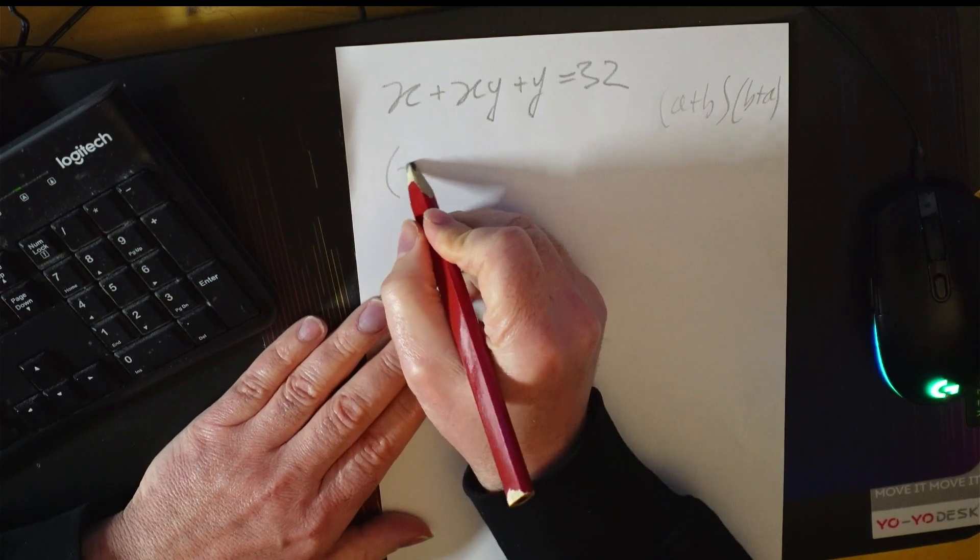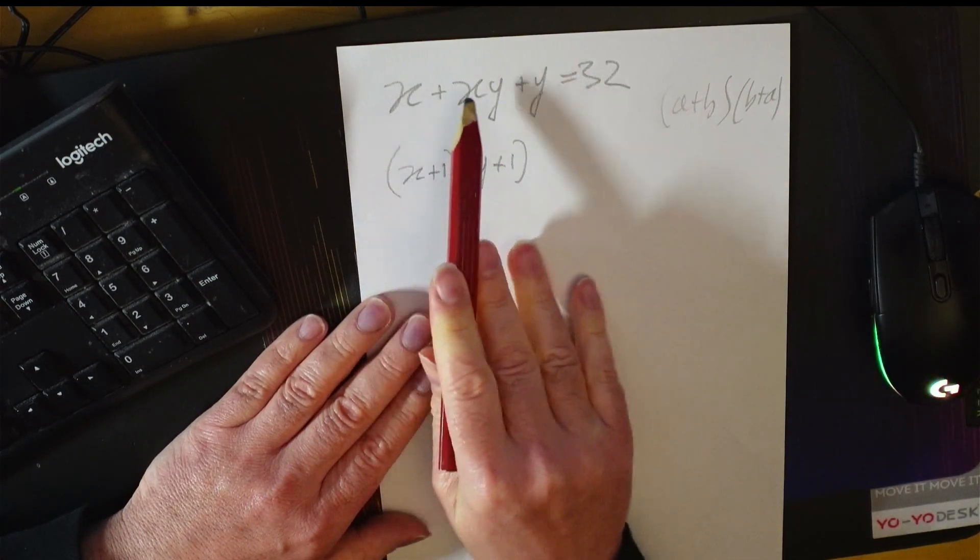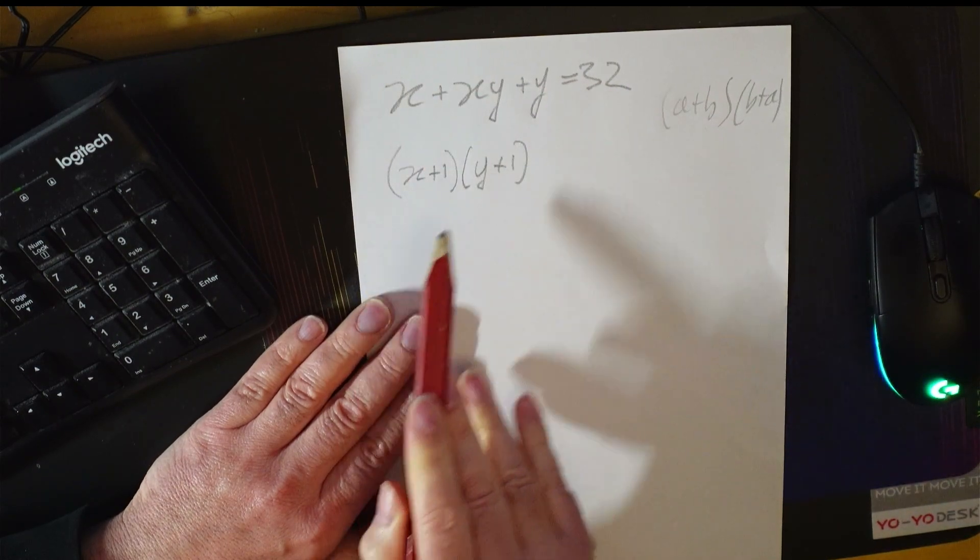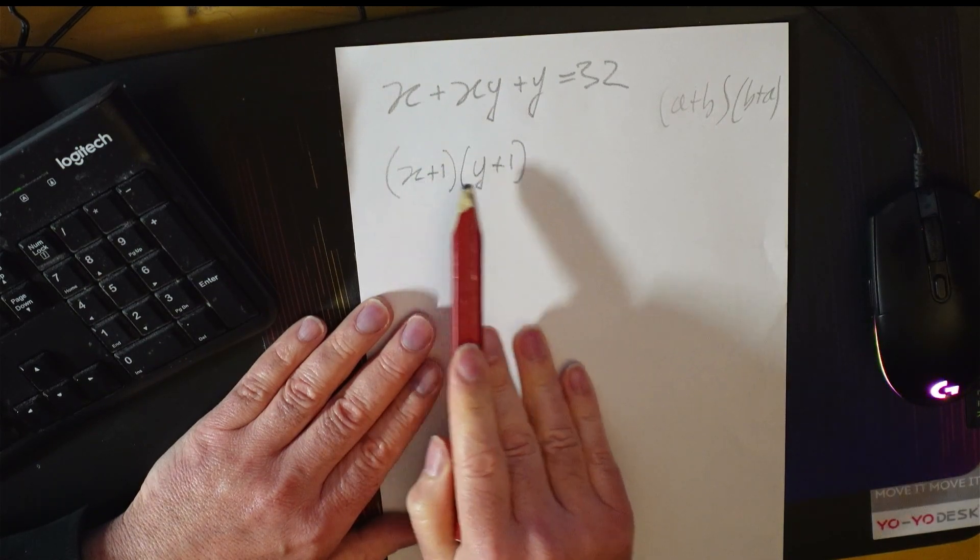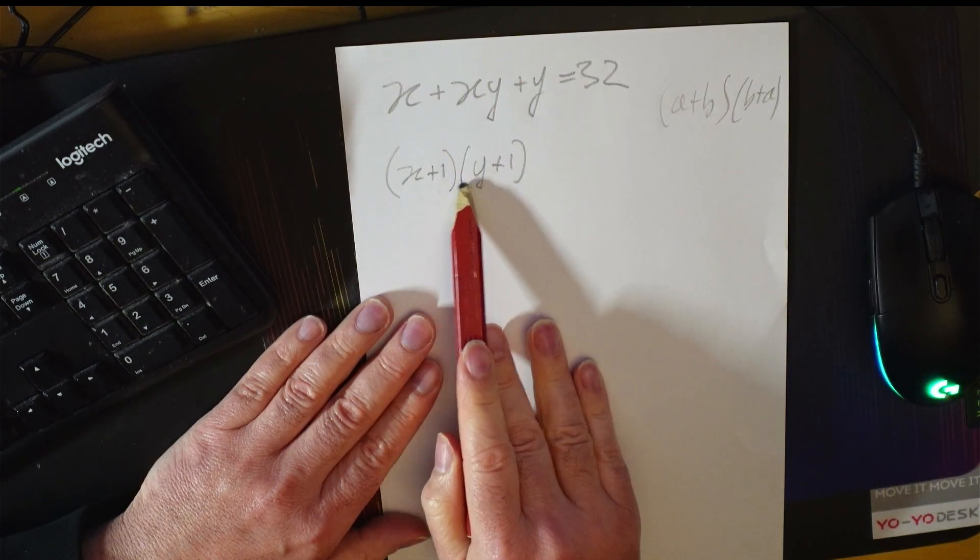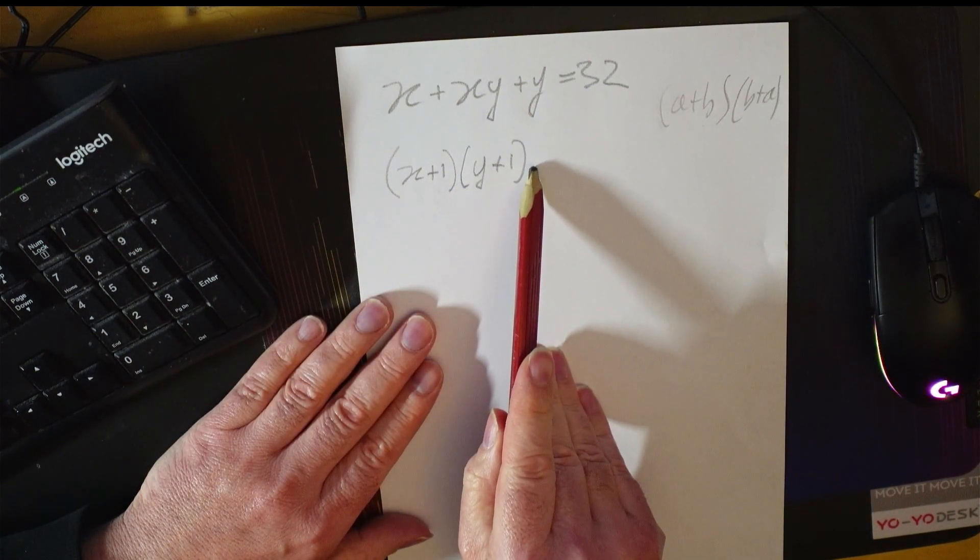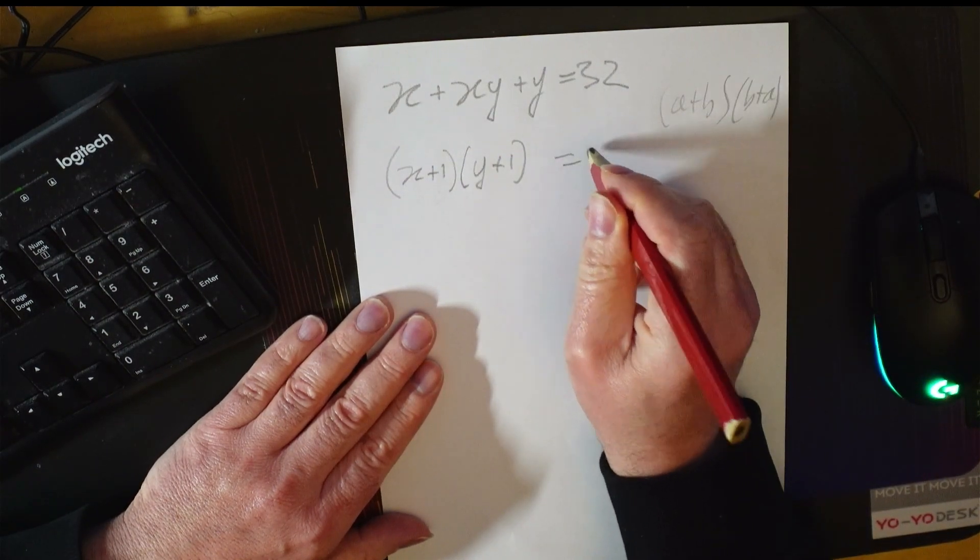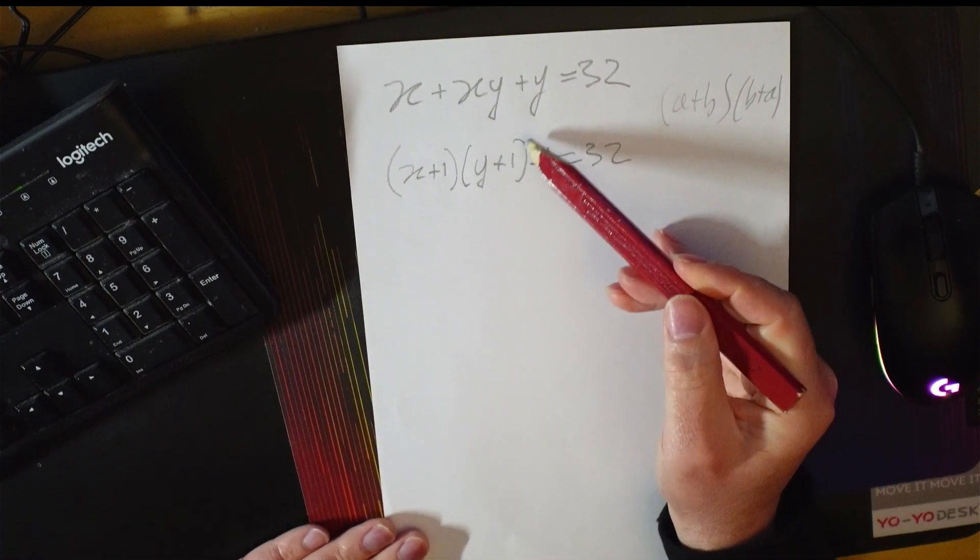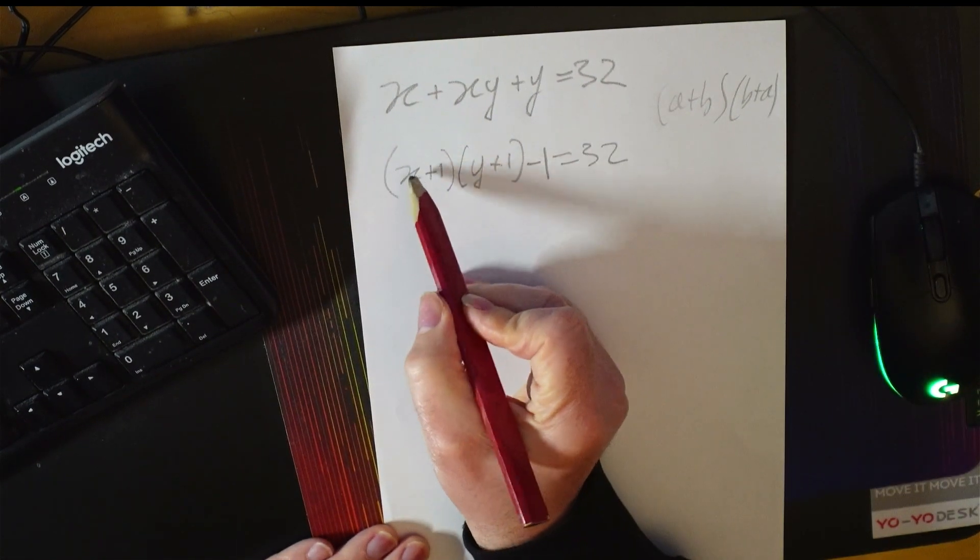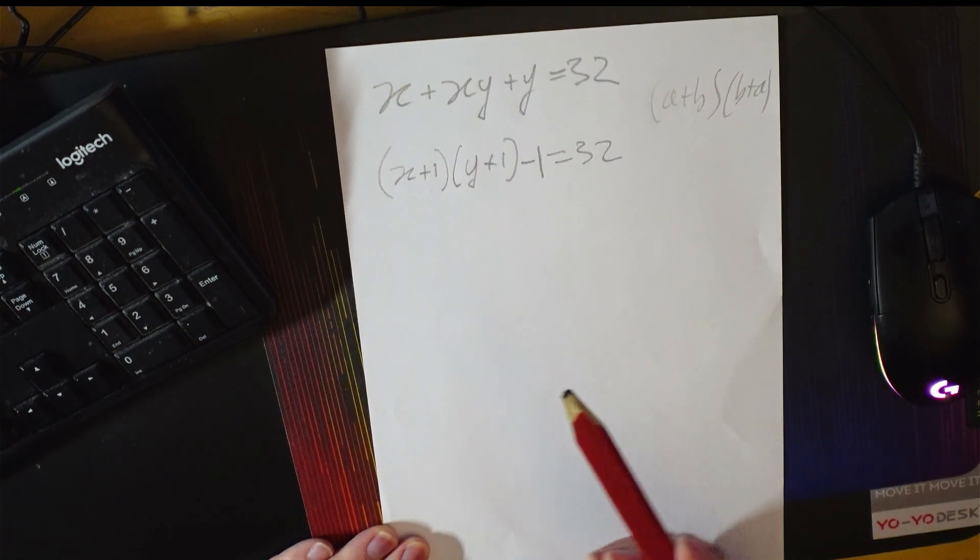In other words, x plus 1 multiplied by y plus 1 almost gives us this. You do x times 1 gives you the x, x and y gives you the xy, and y times 1 gives you the y, but there would also be plus 1. So if you want to keep this the same, then you have to subtract 1. How you get that insight to go to this is the interesting part, but once you've got there you can see how these are equivalent.